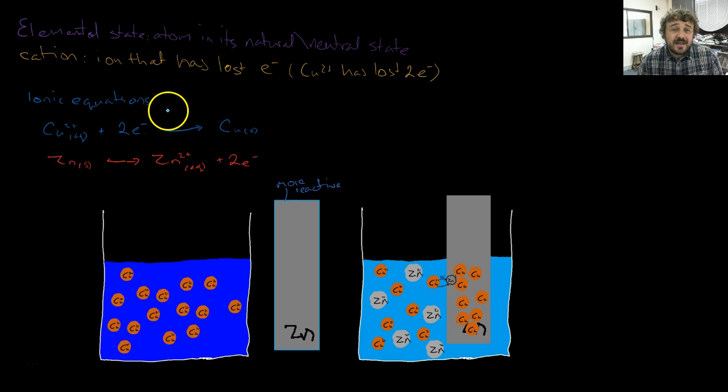The cation, that's an ion that has lost electrons. In this case, we're going to talk about copper, and copper has lost two electrons.